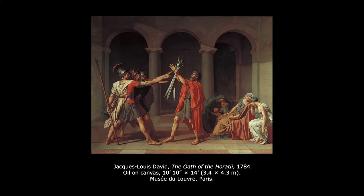We're going to take a look at the work of Jacques-Louis David — he's French, so you say 'David,' not 'David.' This is called The Oath of the Horatii from 1784, oil on canvas. It's quite large: 10 feet 10 inches tall and 14 feet wide. This is not a painting that could fit comfortably into most people's homes — you're not going to have a wall that big. So this is a history painting, and a very large one.